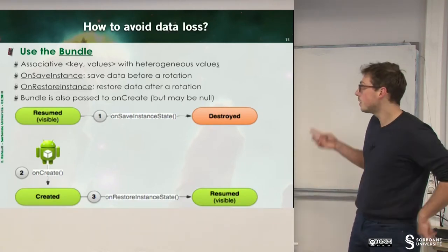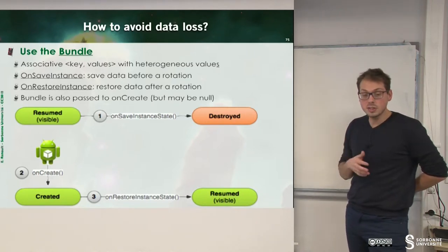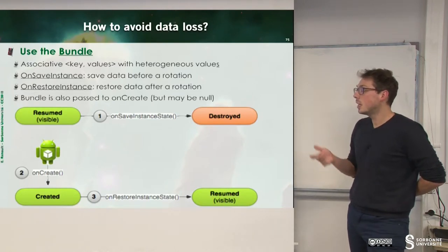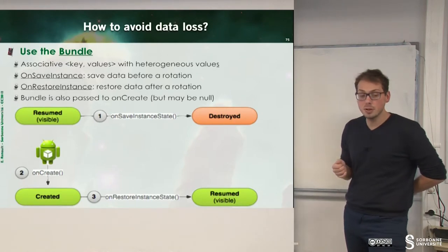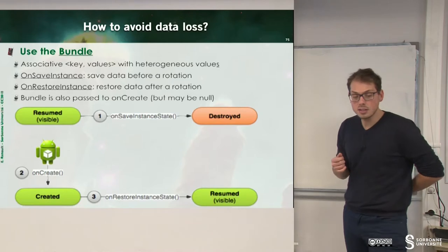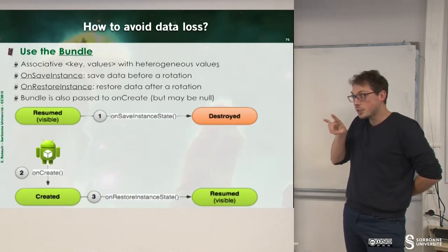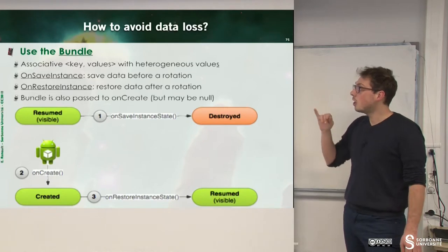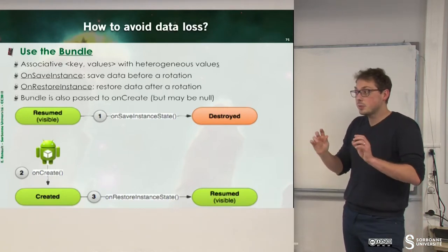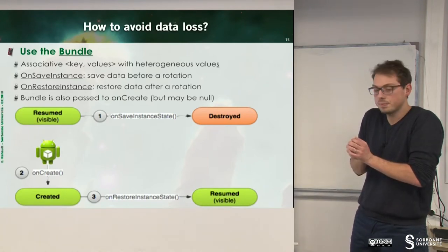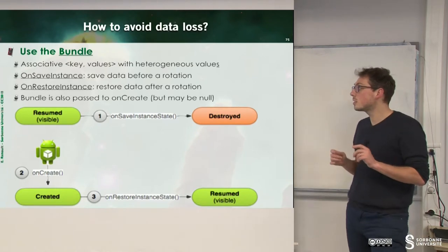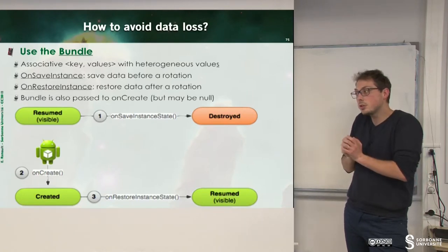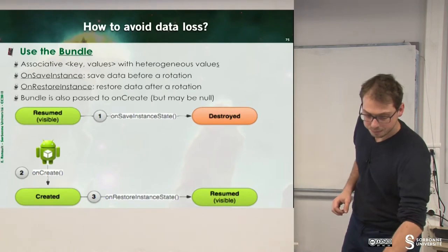This bundle is simply an associative key-value map with heterogeneous values. You have to put the information inside of the bundle during the onSaveInstanceState method — just before the rotation. When your application is rebuilt, a method called onRestoreInstanceState will be called, and you can grab the information you saved. You can also note that the bundle is passed to the onCreate method, so you can also reload your data from onCreate.